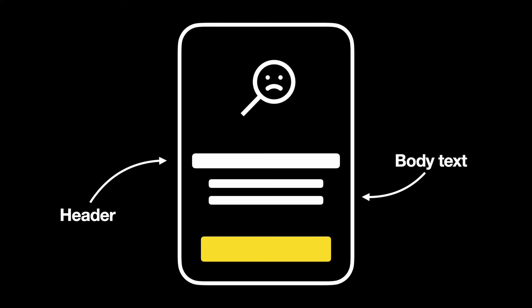Now let's discuss what elements empty states consist of. The default empty state should communicate the system status and create context for the user on what's happening. It's important to provide a summary of the system state in the header and description, which should tell the user why they see the empty state.